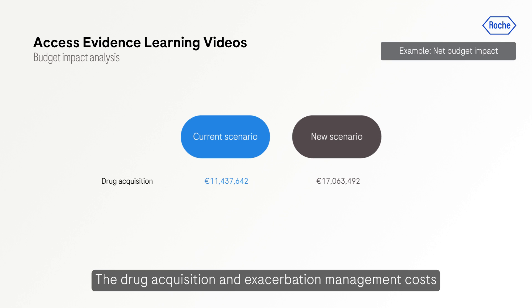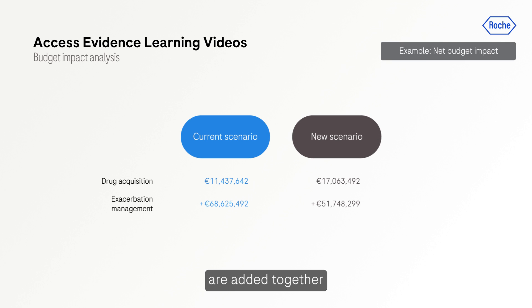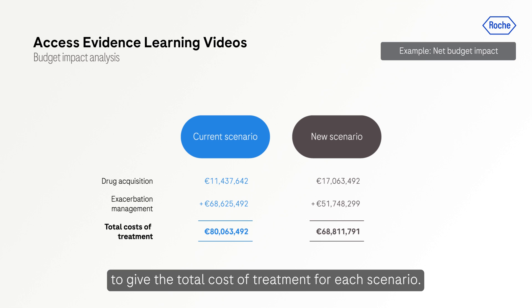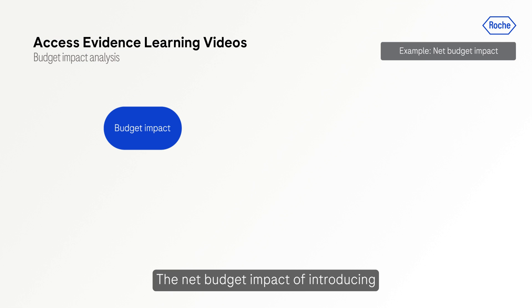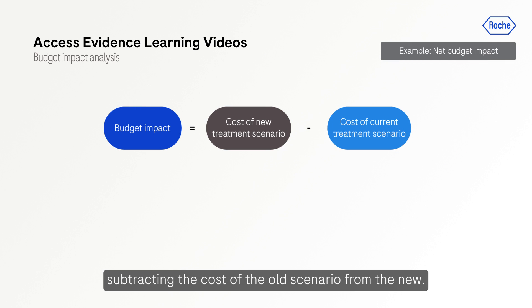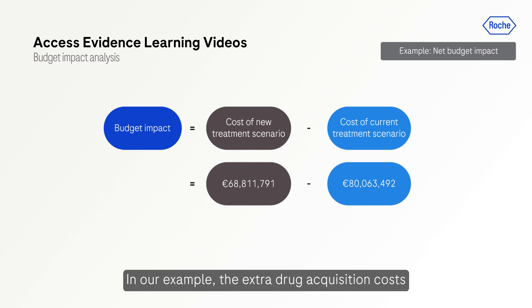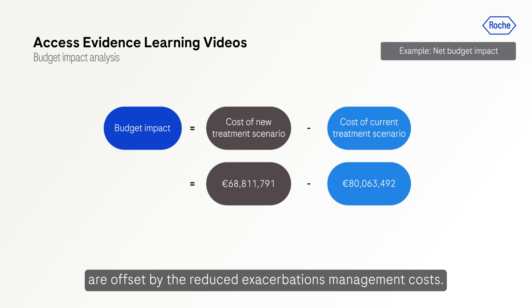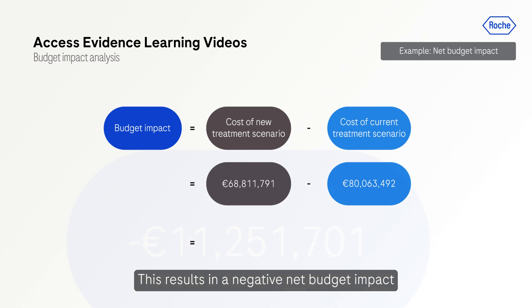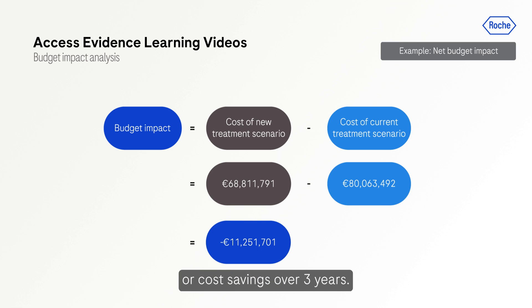The drug acquisition and exacerbation management costs are added together to give the total cost of treatment for each scenario. The net budget impact of introducing the new treatment is then calculated by subtracting the cost of the old scenario from the new. In our example, the extra drug acquisition costs associated with the new intervention are offset by the reduced exacerbation management costs. This results in a negative net budget impact, or cost savings, over three years.